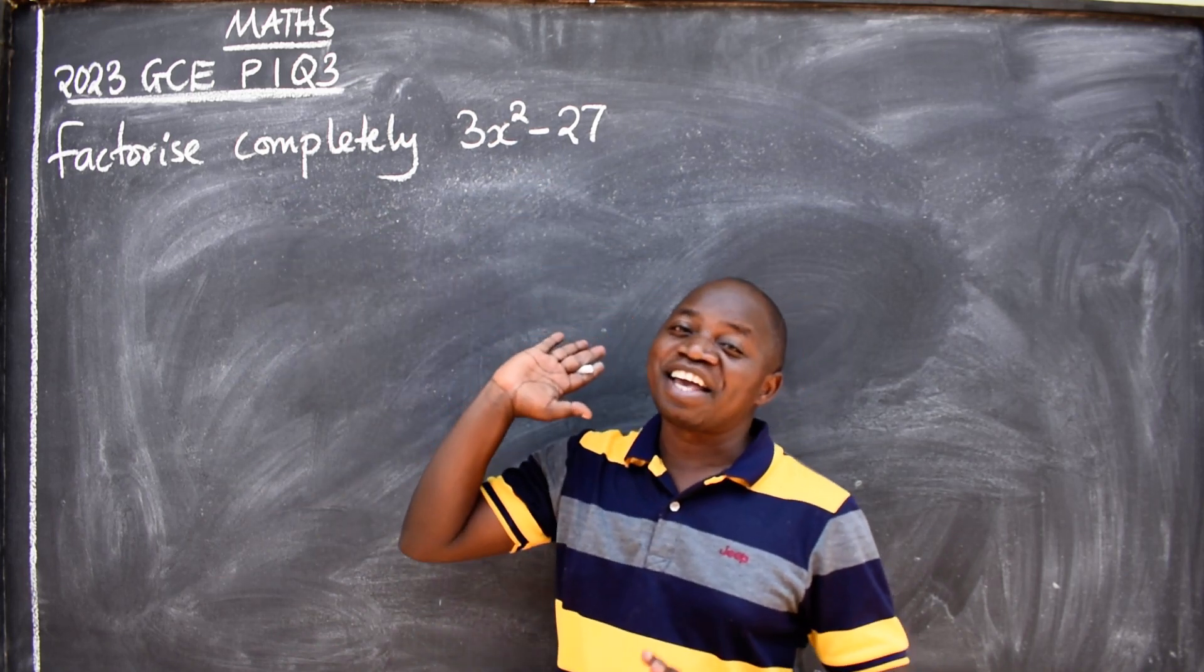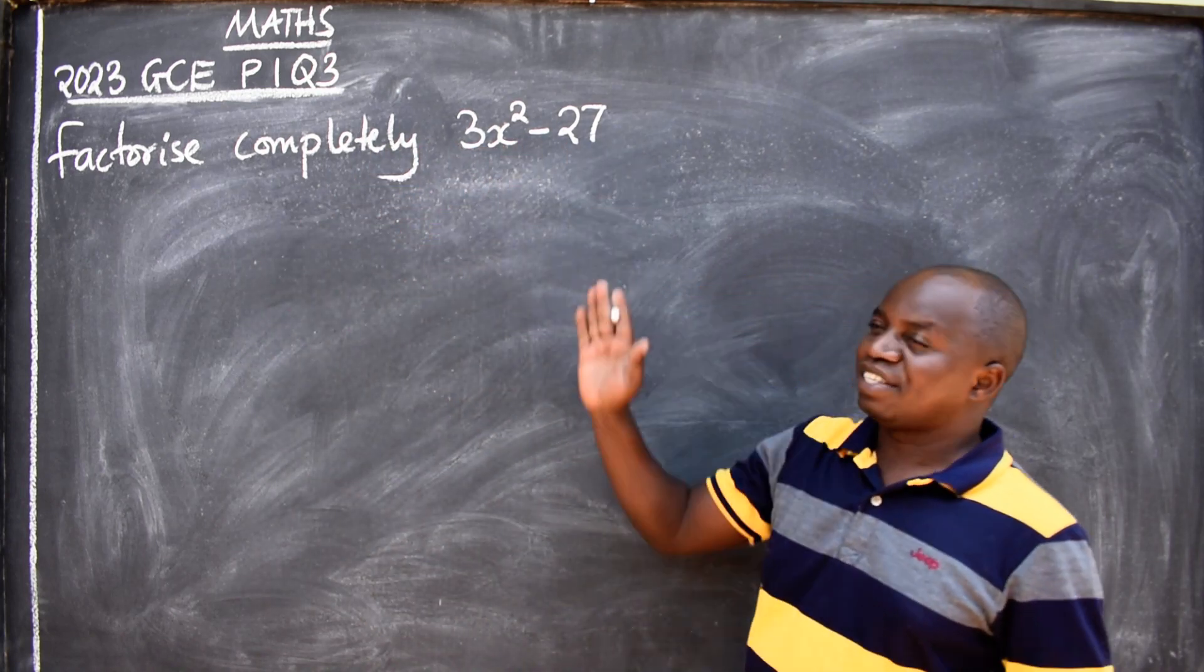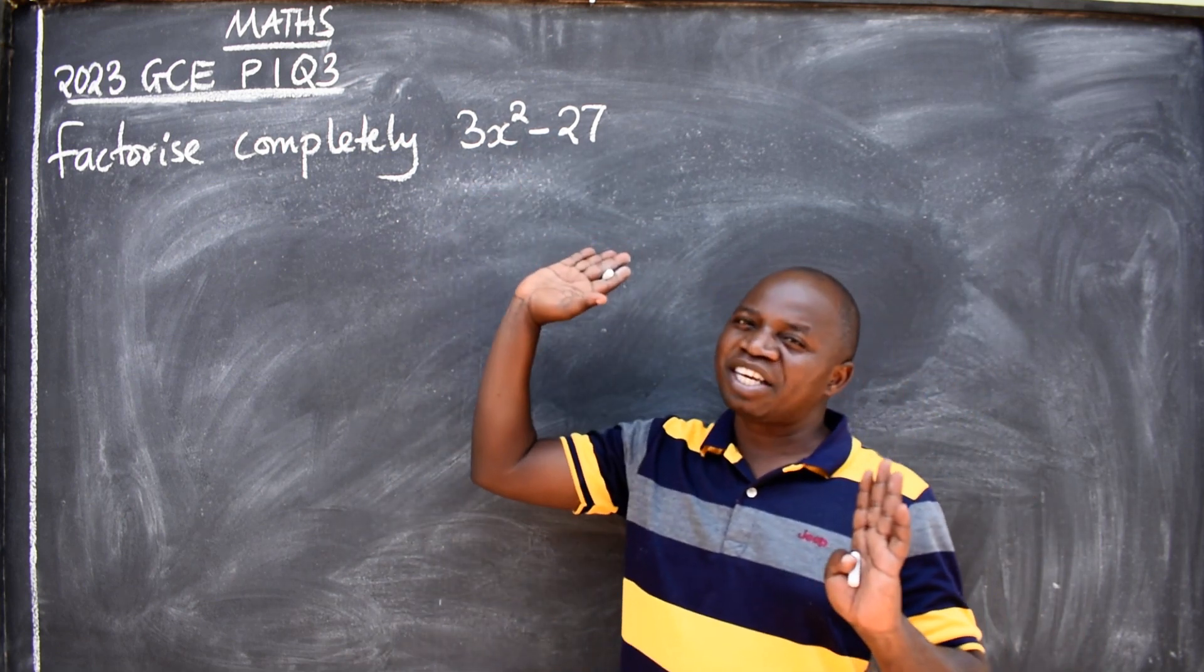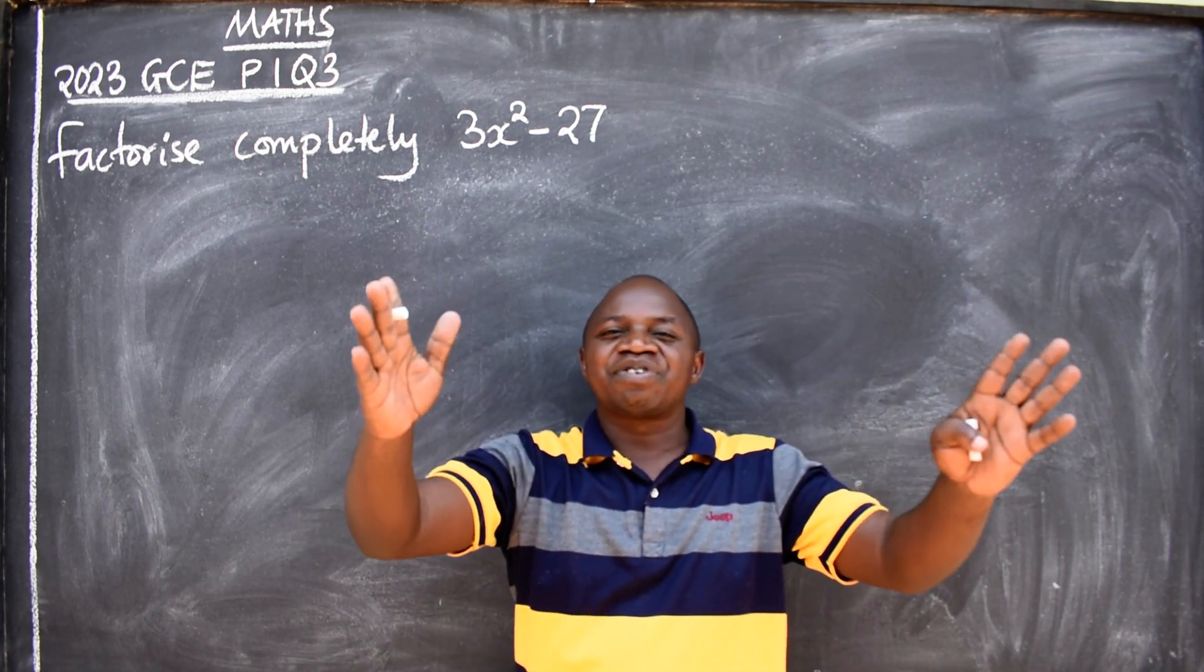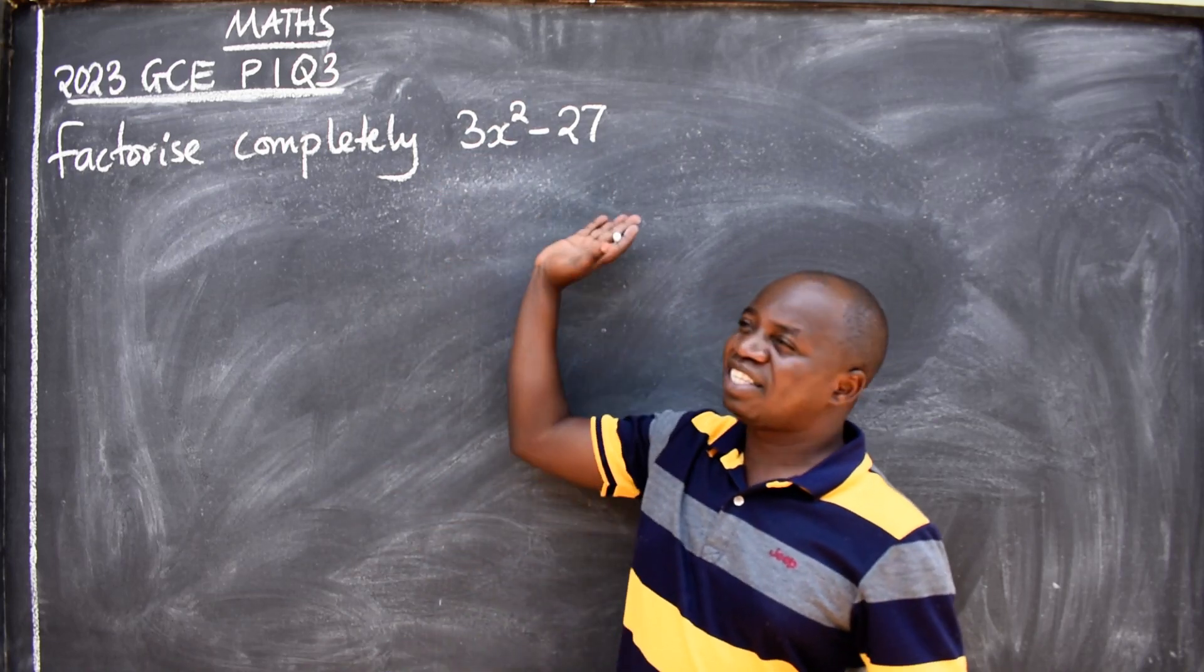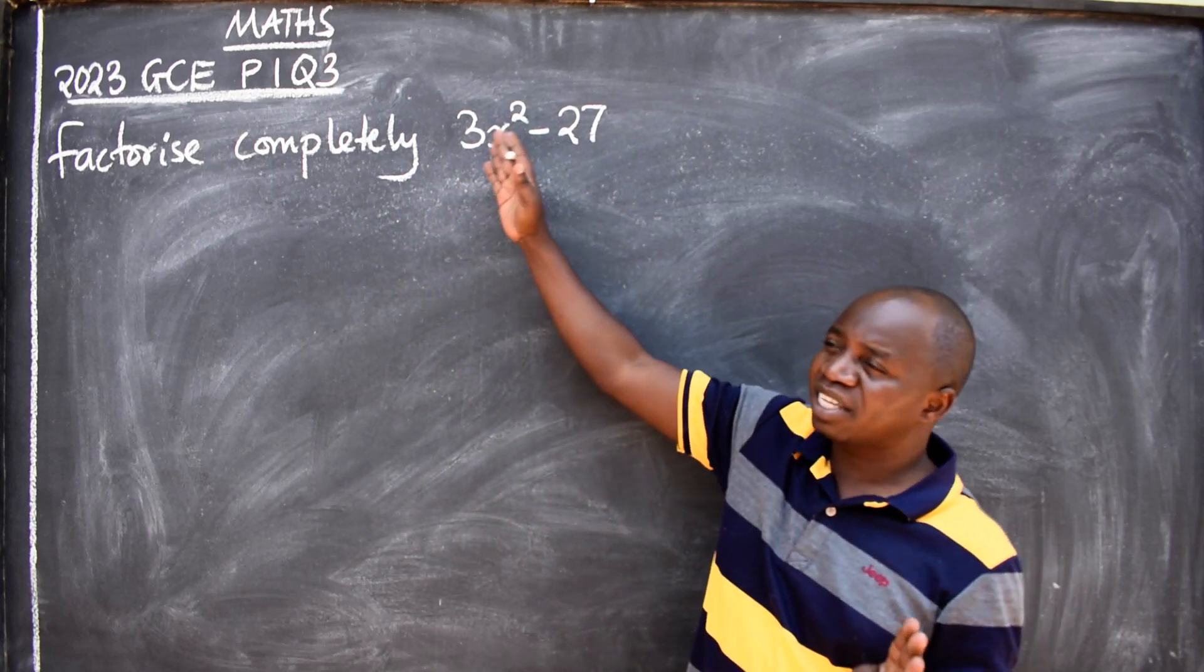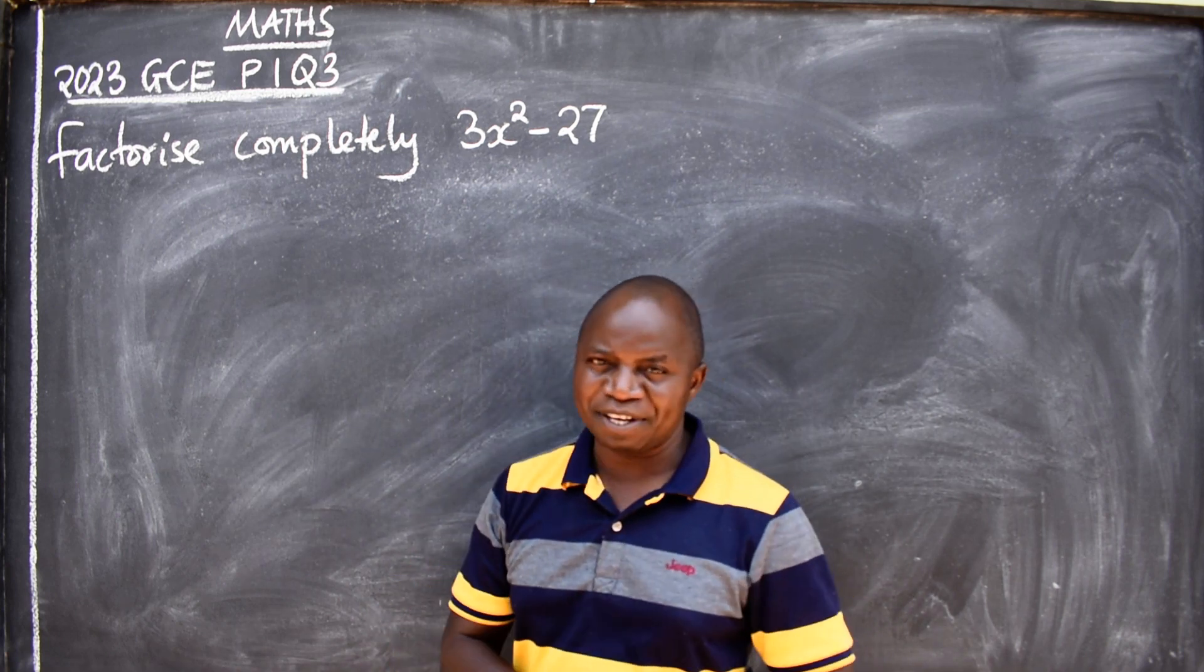You need to identify the type that you are dealing with. Look at how many terms: two terms, one, two. Then immediately you identify, what should come into your mind is difference of two squares. That's the type we are dealing with. This is difference of two squares - only two terms.